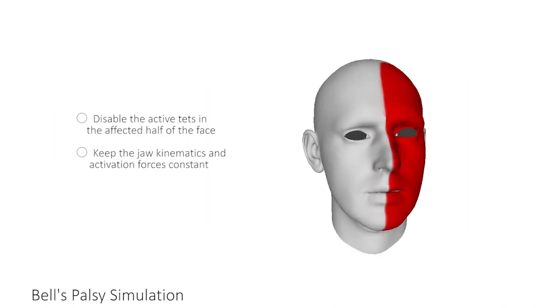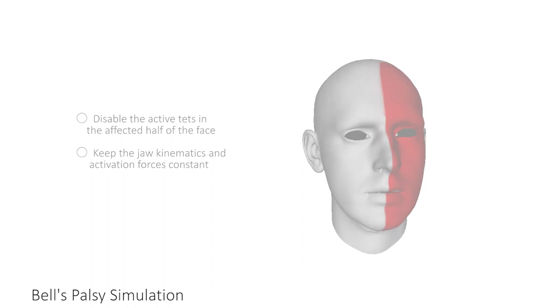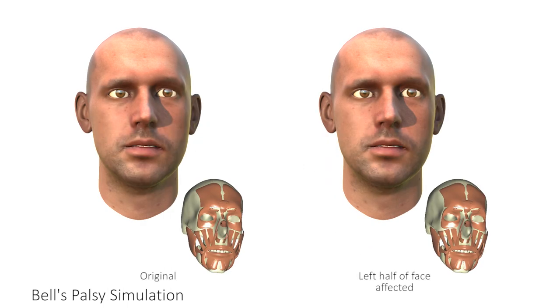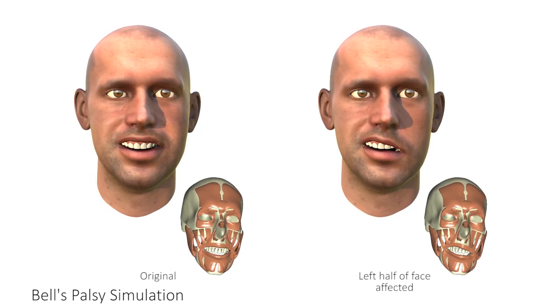Our framework allows for simulating things such as partial paralysis of the face, also known as Bell's palsy. We record an animation of the character and never activate the muscles in the left part of his face. The dynamics remain the same.